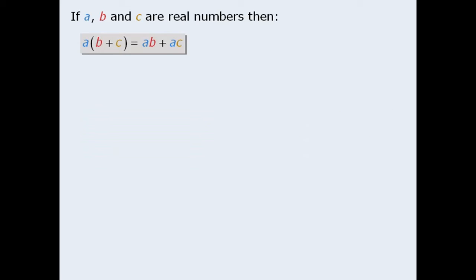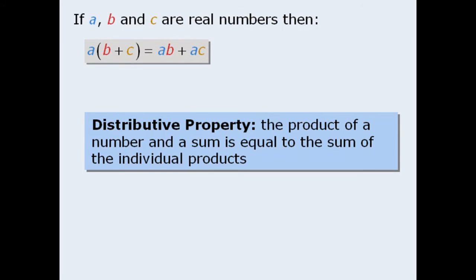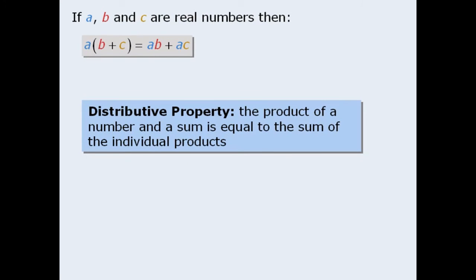The next property is called the distributive property which is illustrated by this example. This property says that the product of a number and a sum is equal to the sum of the individual products. In other words, a times the sum of b and c is equal to the product a times b plus the product a times c. The following example demonstrates this: 3 times 8 plus 2 is equal to 3 times 8 plus 3 times 2.